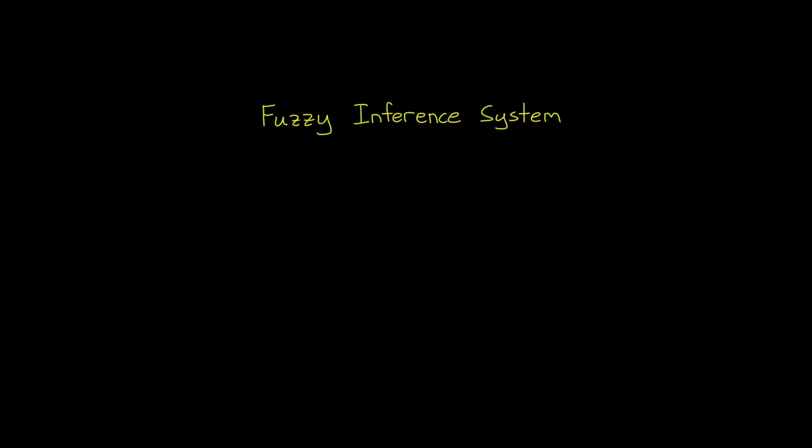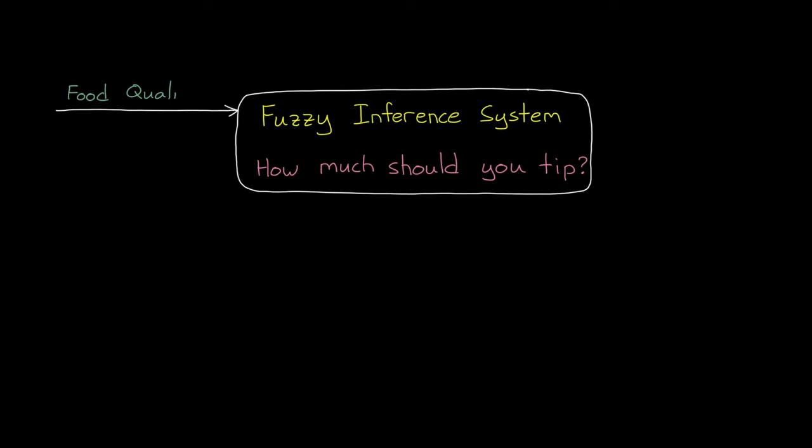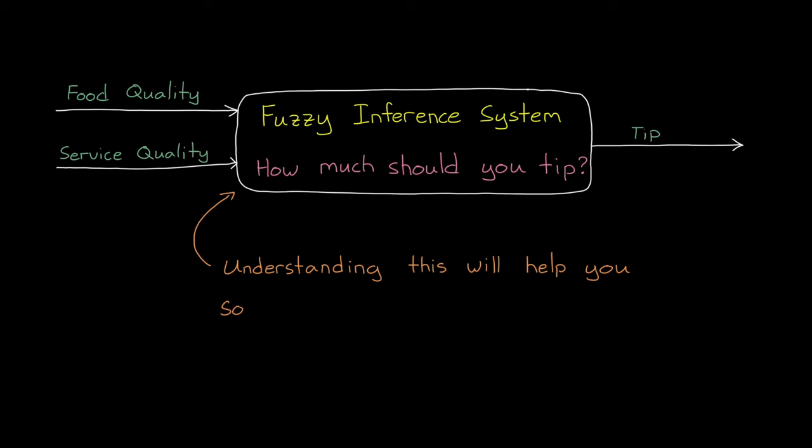For this video, we're going to look at a fuzzy inference system that determines how much you should tip at a restaurant given two inputs, food quality and service quality. Now you might be thinking that this is a rather silly example, but as we go through it, keep in mind that the steps that we take and the understanding we get from walking through this problem will help you solve other fuzzy logic-based problems, whether you're designing a fuzzy controller or any other decision-making process. Okay, to walk through this example, I created a simple app in MATLAB to visualize each of the steps in the inference process. And like we did before, we're going to break this problem up into three distinct sections: fuzzification, inference, and defuzzification. So let's start with fuzzification.